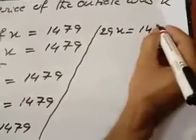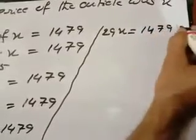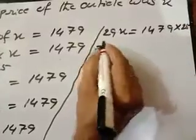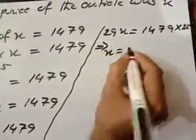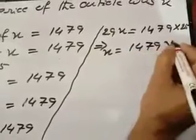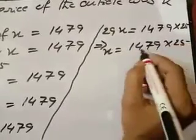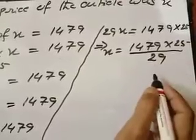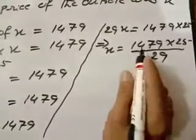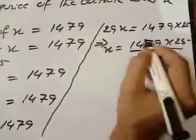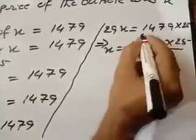1479 into 25, or X is equal to how much, 1479 into 25 divided by 29, by 29. 1479 it will be completely divisible, 5 and 1, 51.